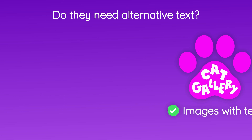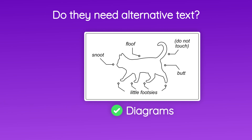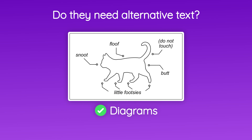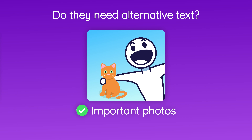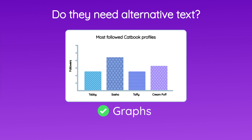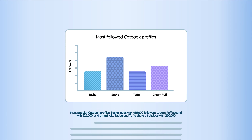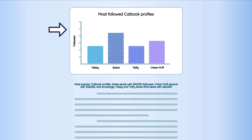Next up: is there text in the image? Is it a diagram? Is it an important photo, or even a graph? Alt text to describe the information is needed unless it's somewhere else on the page, like a caption or this blurb over here.